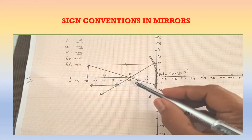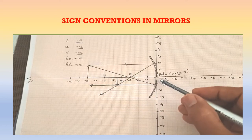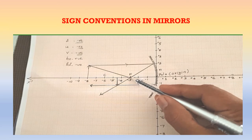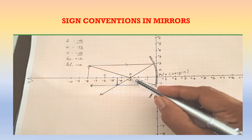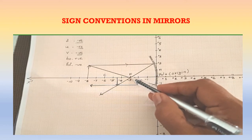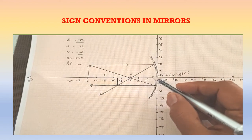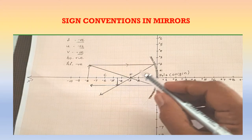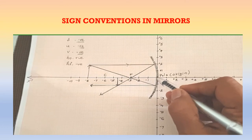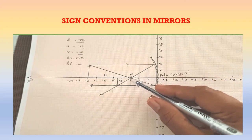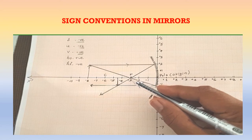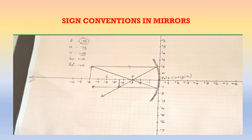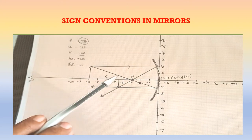First, let us check the sign of the focal length. This is the focus of the concave mirror — a parallel beam of light falling on the concave mirror passes through the focus. The focal length is the distance between the pole and the focus. Here, that distance is −3, because the focus is formed on the left side of the pole, or the left side of the origin of the Cartesian plane. So the focal length is negative.